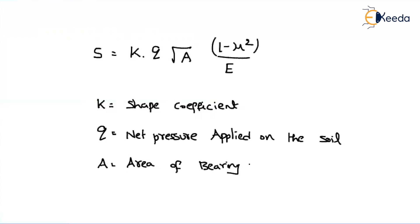And what about E? E is nothing but elasticity of the soil. And you already know, mu is nothing but Poisson's ratio.